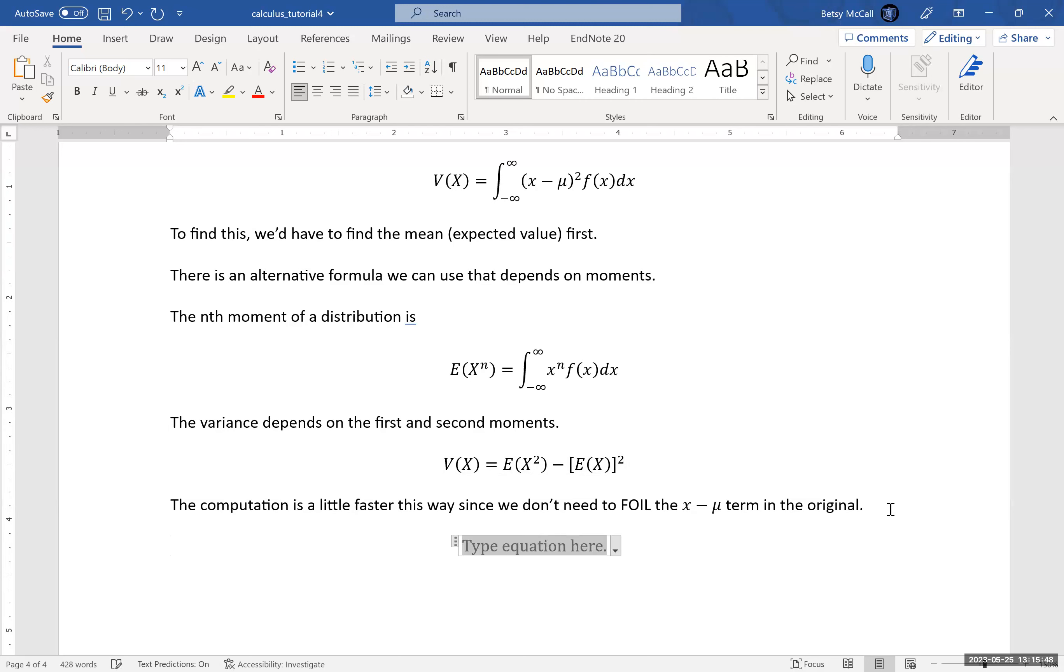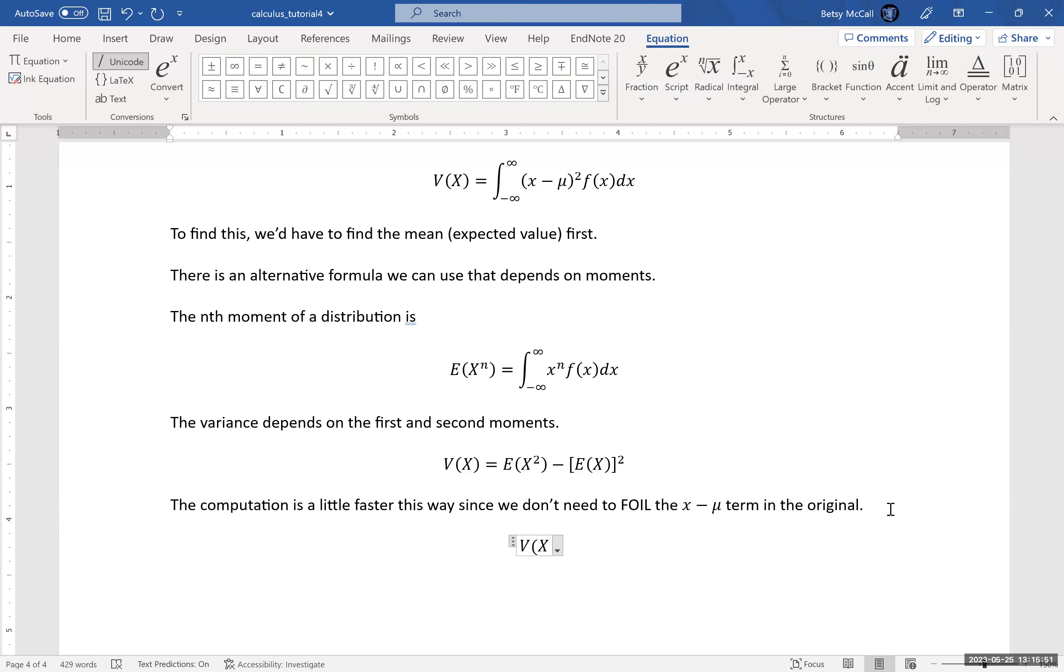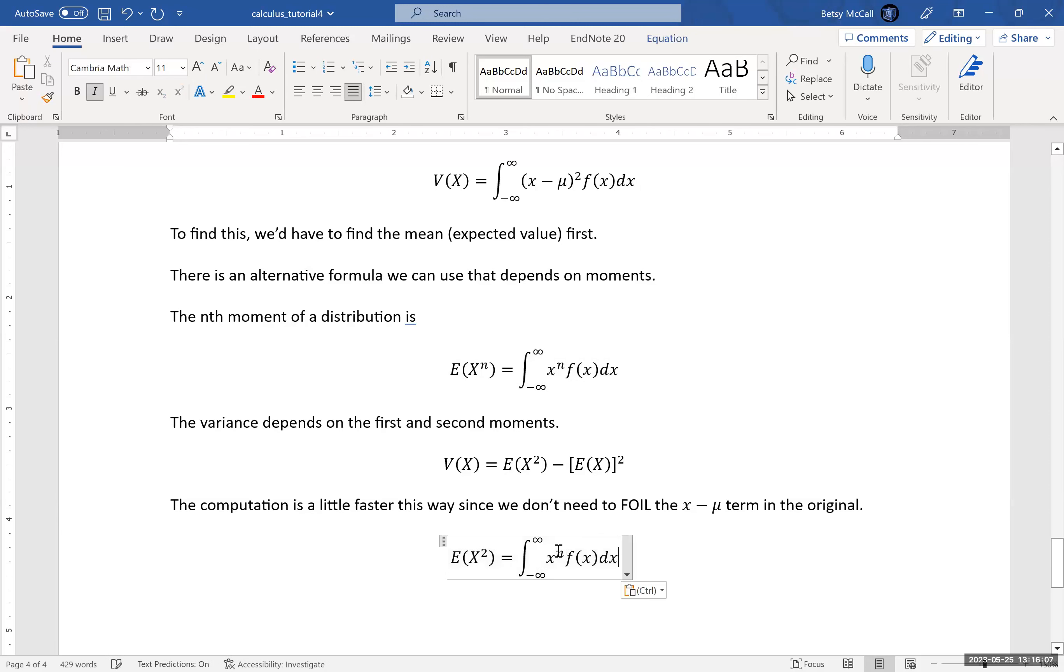So let's actually calculate the variance using this shortcut procedure and the mean that we found earlier. Actually, let's not do that. Let's just find E(x²) first. We're going to find the second moment first, because that's part of our formula. In the nth moment formula, I'm going to replace this with squared.